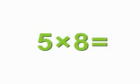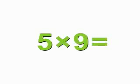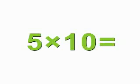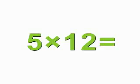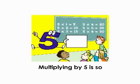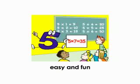5 times 7 is 35, 5 times 8 is 40, 5 times 9 is 45, 5 times 10 is 50, 5 times 11 is 55, 5 times 12 is 60. Multiplying by 5 is so easy and fun.